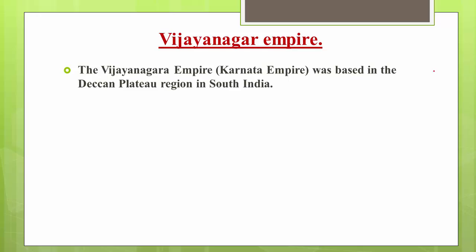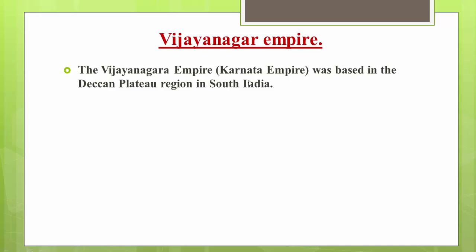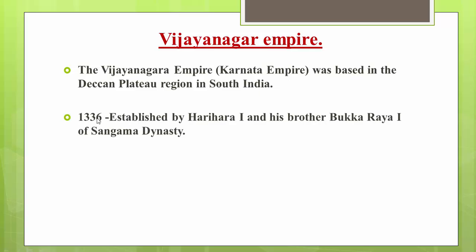The Vijayanagara Empire, also known as the Karnataka Empire, was based in the Deccan Plateau region in South India. As we have seen, Mysore state was also situated in a plateau region, so Vijayanagara Empire occupied the same broad geographical area.